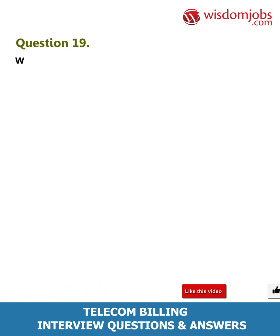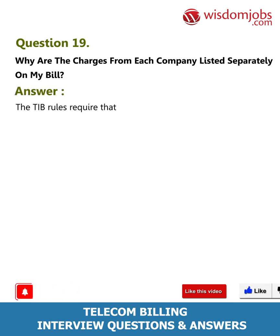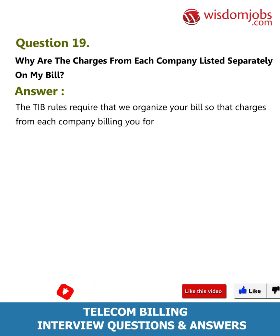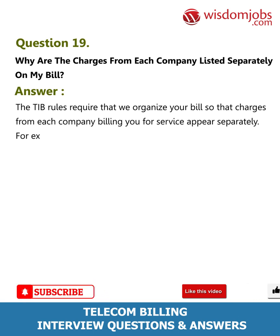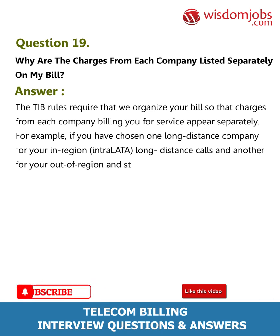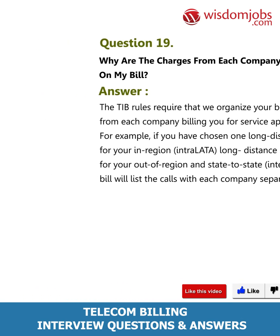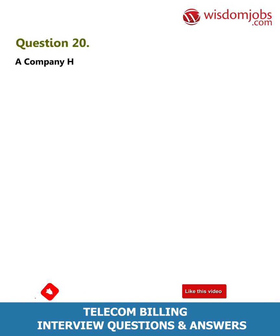Question 19: Why are the charges from each company listed separately on my bill? Answer: The TIB rules require that we organize your bill so that charges from each company billing you for service appear separately. For example, if you have chosen one long-distance company for your in-region interlata long-distance calls and another for your out-of-region and state-to-state interlata calls, your bill will list the calls with each company separately.